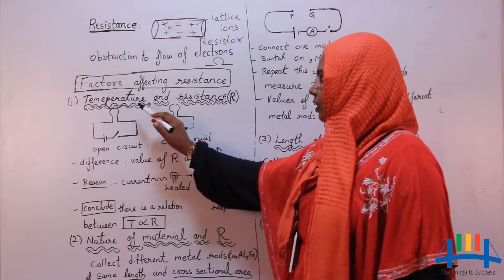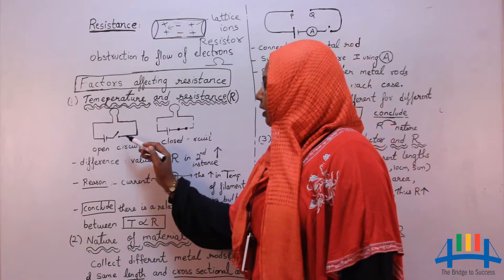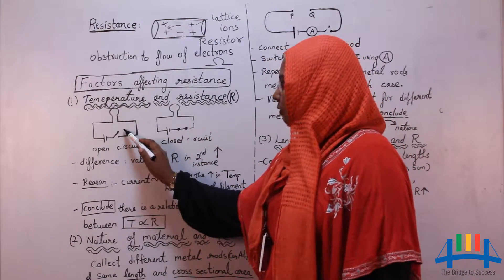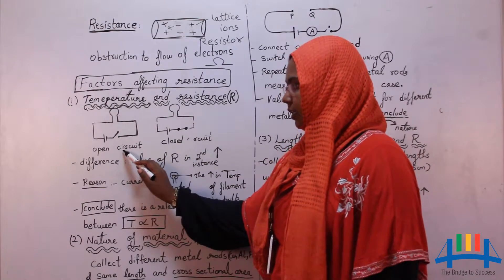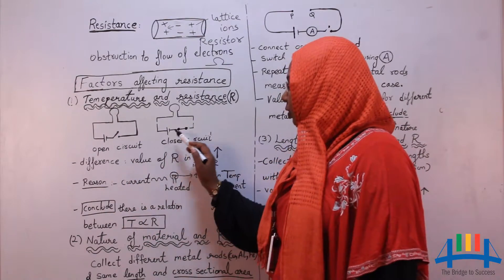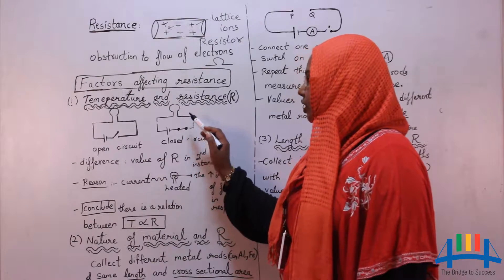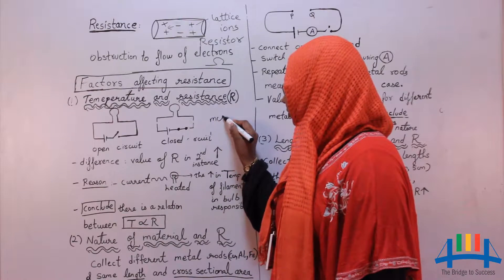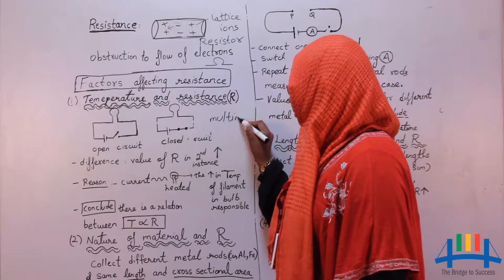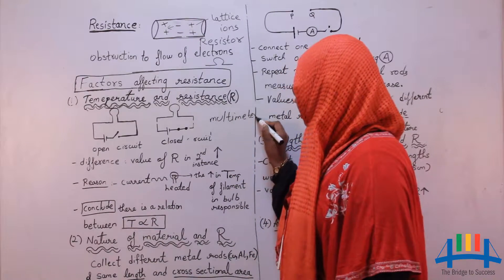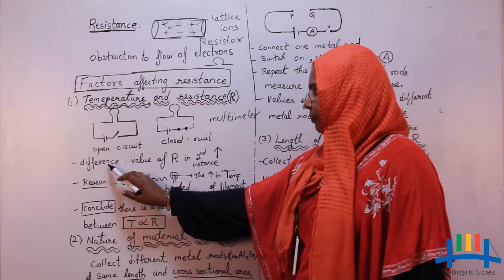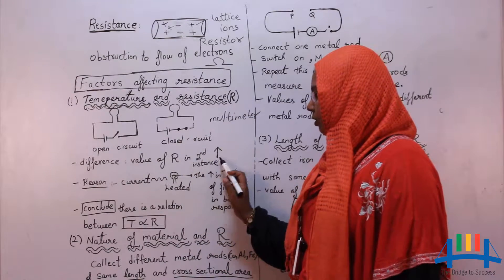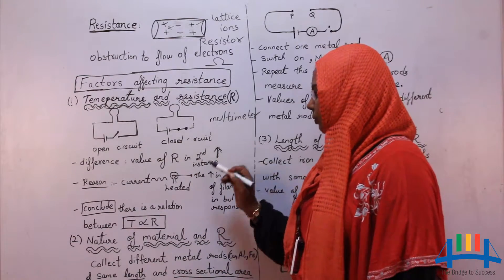Let us start with temperature and resistance. Make a circuit as shown. Measure the value of resistance of this bulb in an open circuit. Then close the circuit and measure the resistance again using a device called a multimeter. Multimeter is a device which measures resistance. You will notice the value of resistance in the second instance is more when compared to the first one.